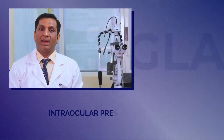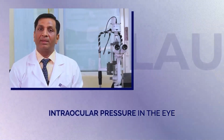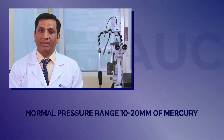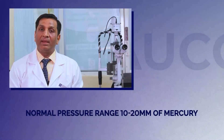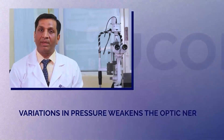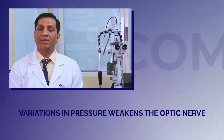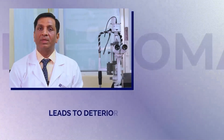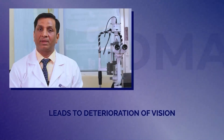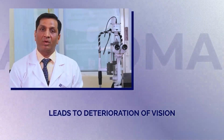As you all know, the eyeball has a pressure inside. Normally, the pressure varies between 10 to 20 millimeters of mercury. Any variation in this intraocular pressure will lead to weakening of the main nerve of the eye, that's the optic nerve, which leads to gradual deterioration of the vision from the surroundings to the center. This is called glaucoma.